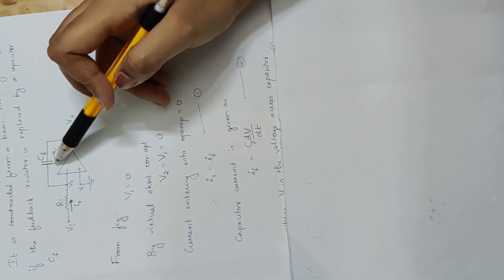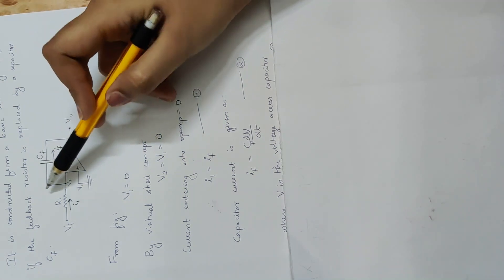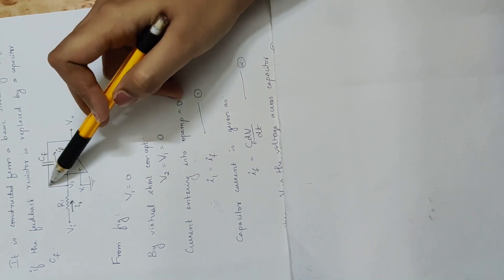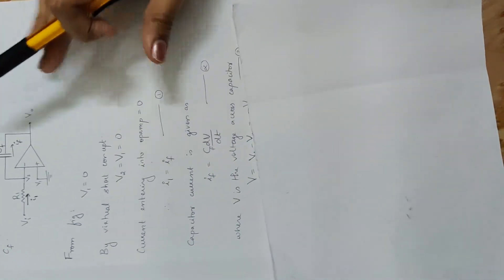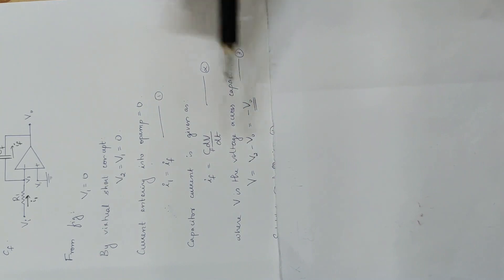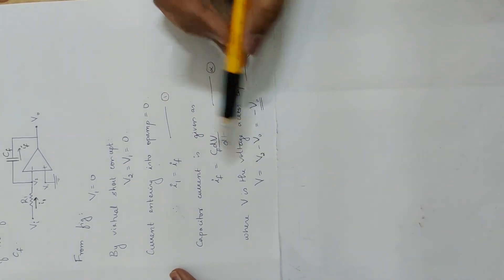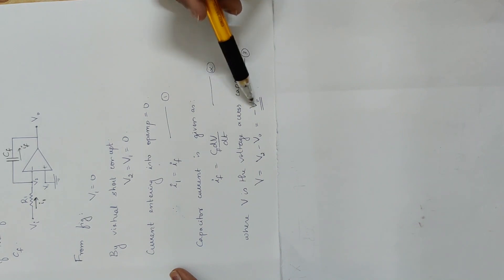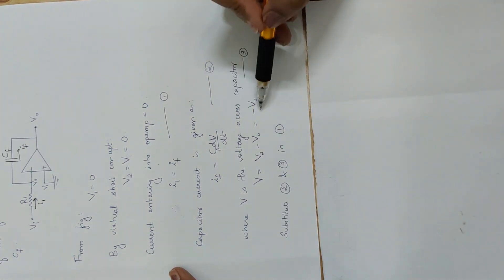For the capacitor, the voltage across it in the current direction is V2 minus VO. Since V2 is equal to 0, substituting gives us minus VO as the voltage across the capacitor.